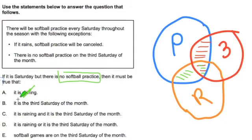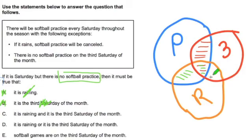This one says it is the third Saturday of the month. Well, potentially it is the third Saturday, but it's possible that practice has been canceled because of the rain — so cross this one off. This one says it is raining and it is the third Saturday. Well, that is definitely going to be true for some of the days — some third Saturdays there will be rain — but that's not necessarily the only reason there would not be practice. It doesn't have to be both.